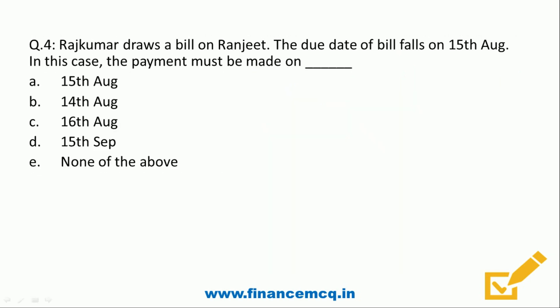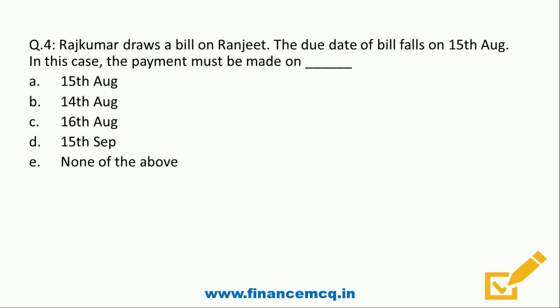Question four: Rajkumar draws a bill on Ranjit; the due date of the bill falls on 15th August. In this case, the payment must be made on — option A: 15th August, option B: 14th August, option C: 16th August, option D: 15th August, option E: none of the above. In case of bills of exchange, from the due date you get three extra grace days.